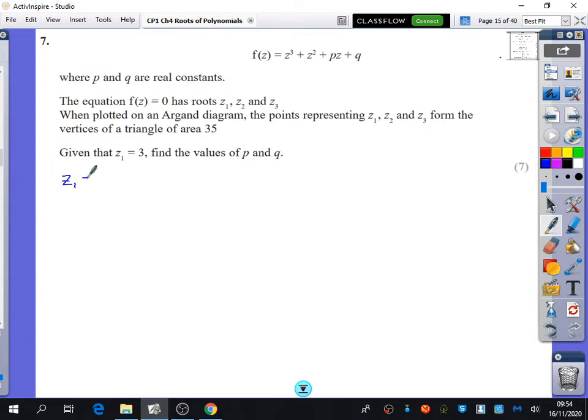So I'm going to write down that z1 is equal to 3, and then we have z2 and z3. Now, lots of you did this in different kinds of ways. I probably would do what Marco had said initially, and you had written on the board, z2 and z3 must be complex conjugates.